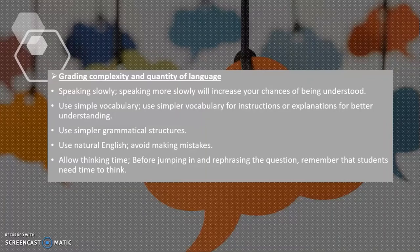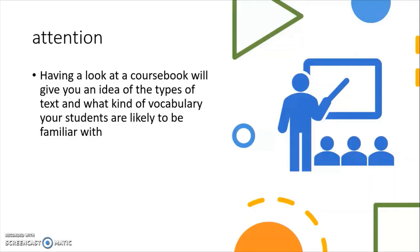Grading complexity and quantity of language. Speaking slowly will increase your chances of being understood. Use simpler vocabulary for instructions or explanations for better understanding. Use simpler grammatical structures. Use natural English and avoid making mistakes. Allow thinking time — before jumping in and rephrasing the question, remember that students need time to think. Having a look at the course book will give you an idea of the types of text and what kind of vocabulary your students are likely to be familiar with.